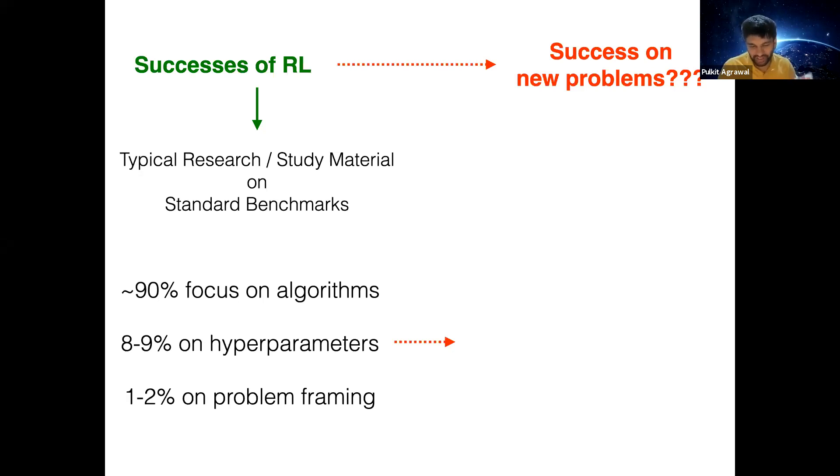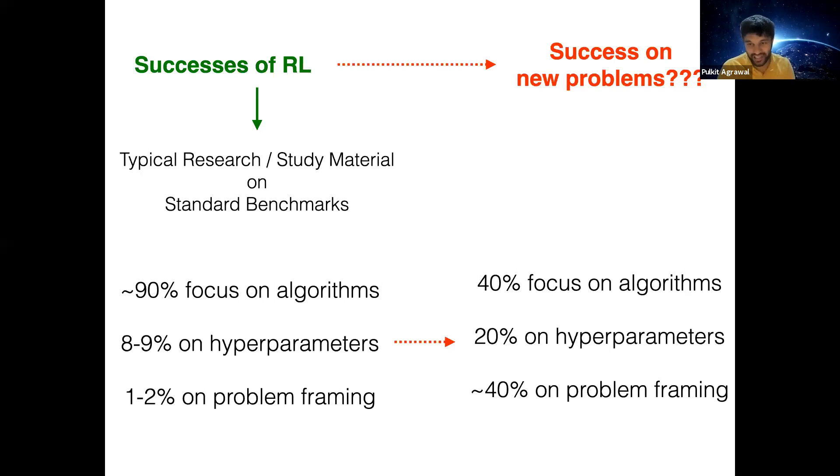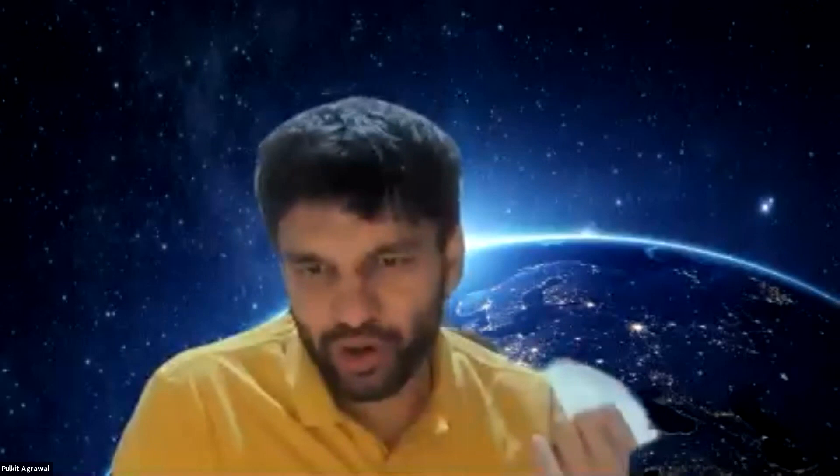Whereas the research and the study materials that you might find online maybe focus 90% on algorithms, 10% on hyperparameters, and one or two percent in problem framing, we think the right balance is different so that we can succeed on new problems. And that is what this course would be offering with a focus on some of the more advanced topics like offline RL, multi-agent RL, but also providing you in-depth knowledge of state-of-the-art algorithms like PPO, SAC, DDPG, and so on. In terms of the problem domains, I don't think we are restricted to just robotics or control. I think between me and Cathy, we have a broad expertise in different domains. For example, Cathy does urban planning, she deals with multi-agent systems, but we would also consider examples from finance and optimizing workflows and so on and so forth.